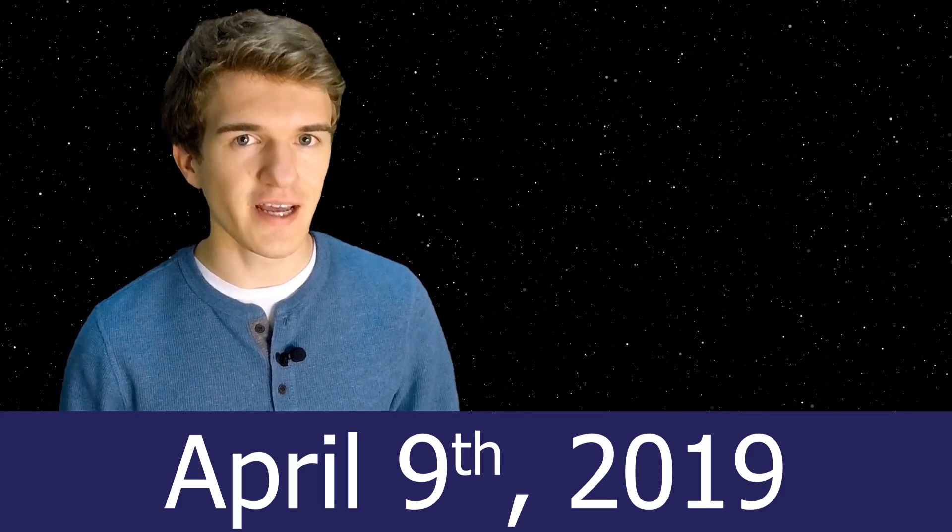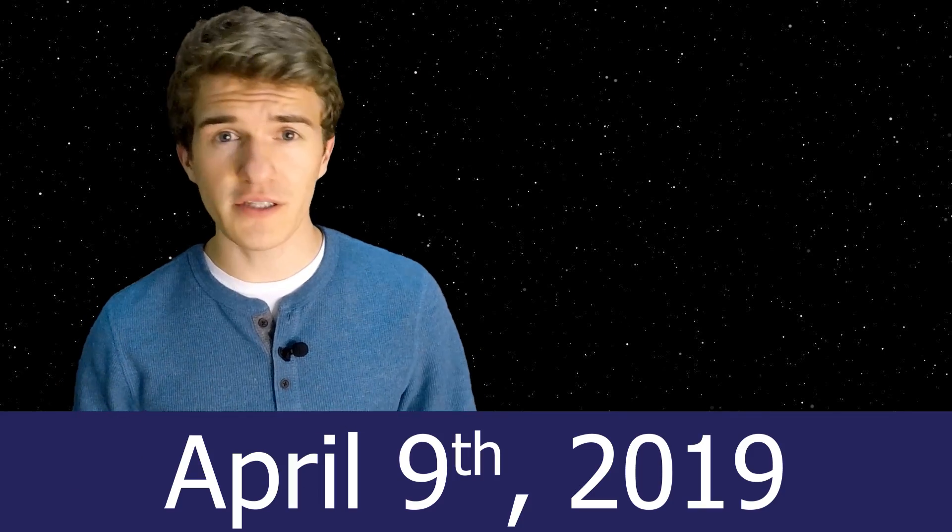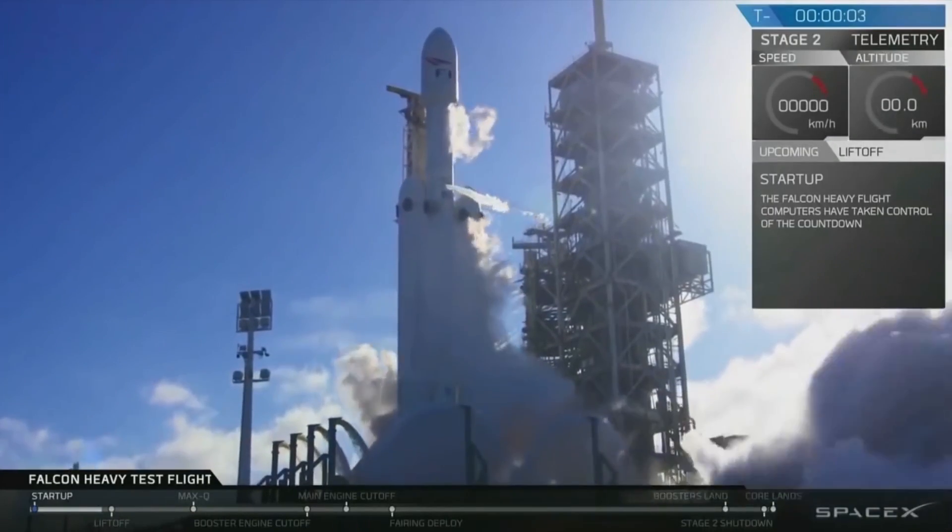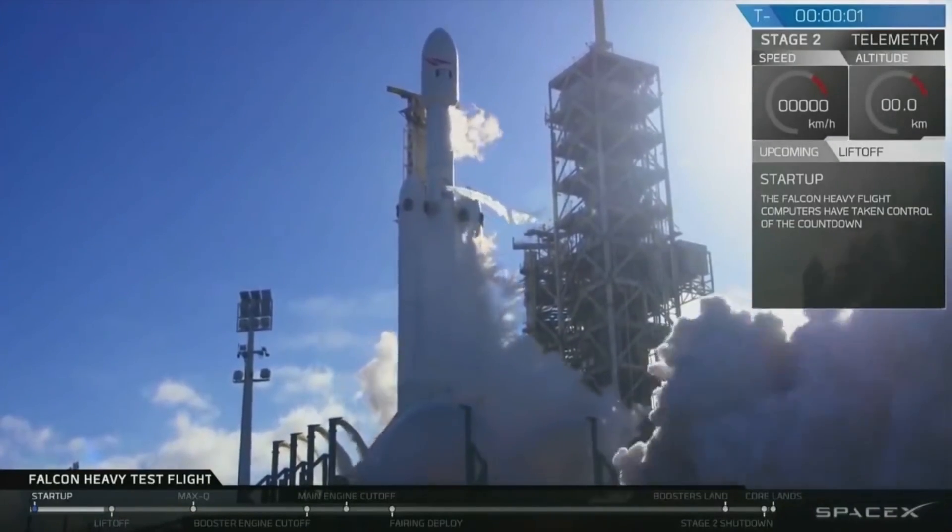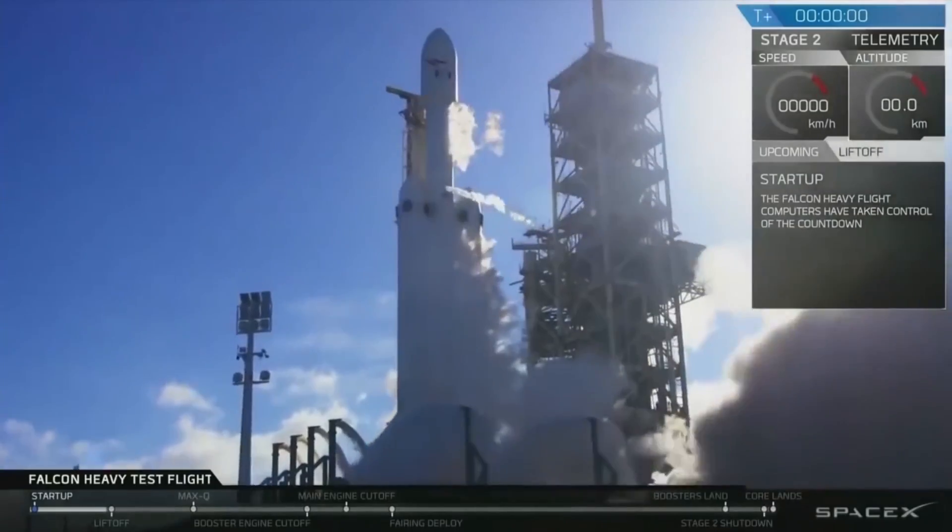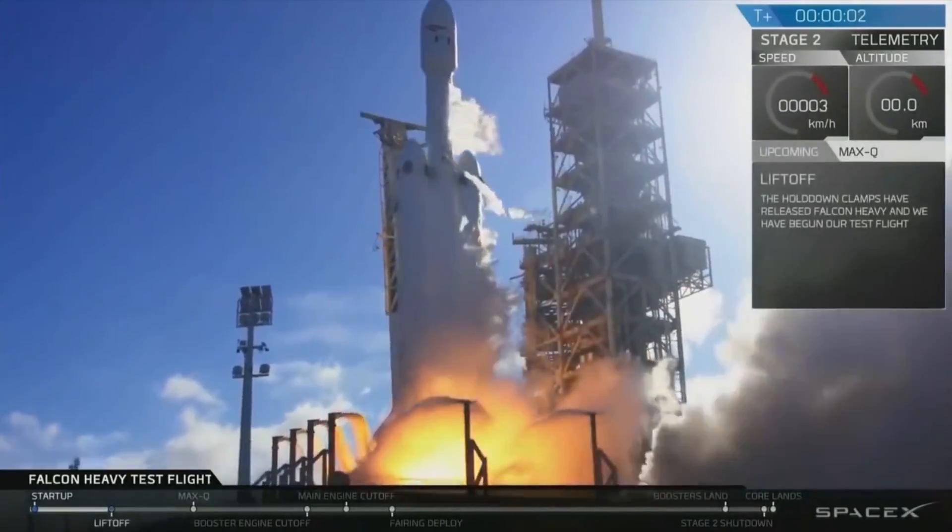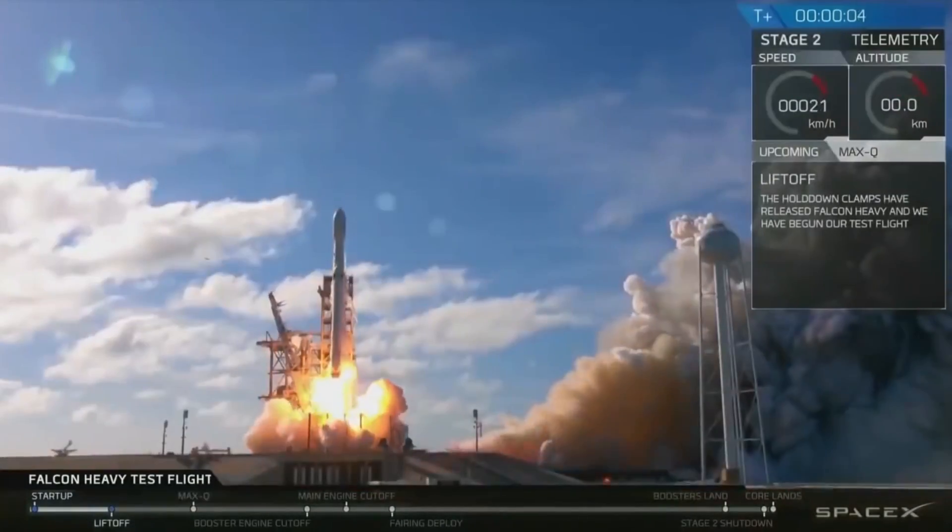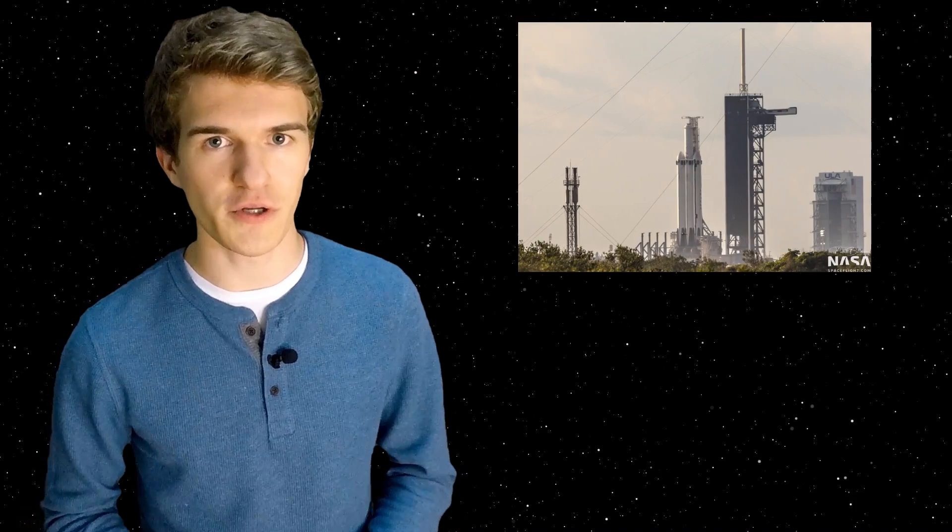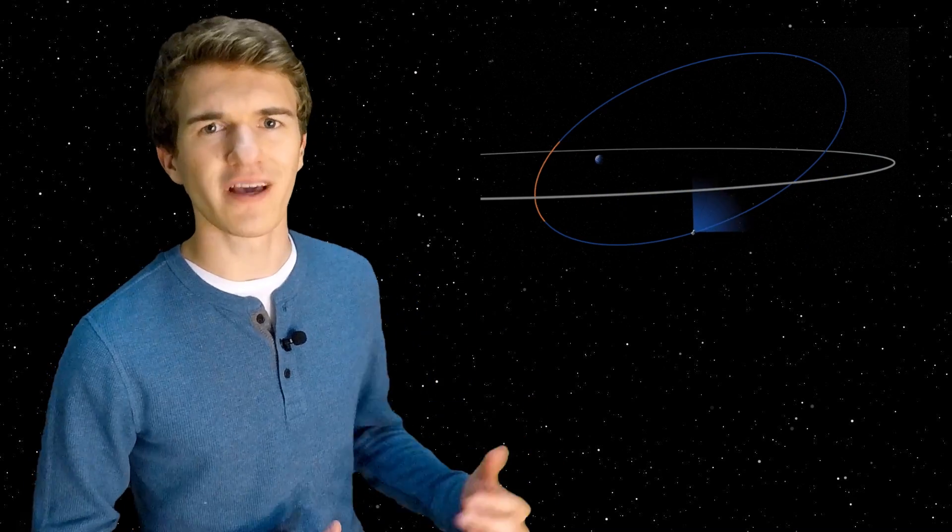On April 9th of 2019, SpaceX will launch their strongest rocket to date, the Falcon Heavy. This one is even stronger than the one they launched last February because it's an upgraded Block 5 version. But this one is also different from their last test launch because it won't be carrying a Tesla Roadster, but rather an actual operational satellite. So what is on board the Falcon Heavy and where will it be going in space? Let's talk about that.